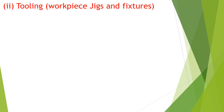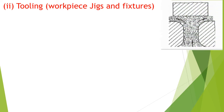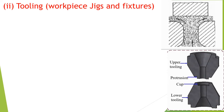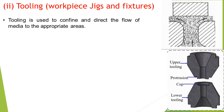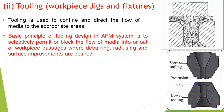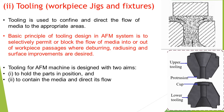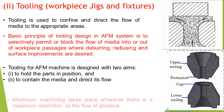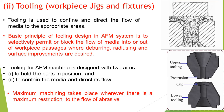Tooling — comprising the workpiece, jigs and fixtures — is used to confine and direct the flow of media to the appropriate areas. The basic principle of tooling design in the AFM system is to selectively permit or block the flow of media into or out of workpiece passages where deburring, radiusing and surface improvements are desired. AFM machine tooling is designed with two aims: to hold the workpiece in position and to contain the media and direct its flow. Maximum machining takes place wherever there is maximum restriction to the flow of abrasive.